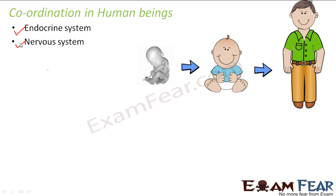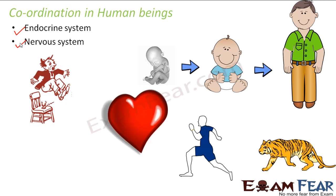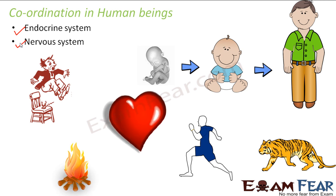The scenarios I was talking about — a man running after seeing a tiger, when you put your leg on fire and immediately take it back, or when you get an electric shock — these involve movement and happen very fast. When you put your leg on the fire you immediately remove it; when you see a tiger you start running. The response is quick, so these processes are taken care of by the nervous system.